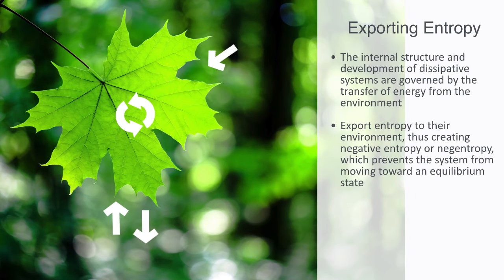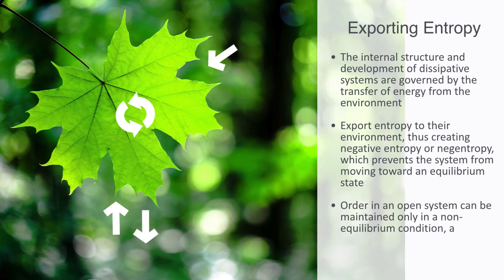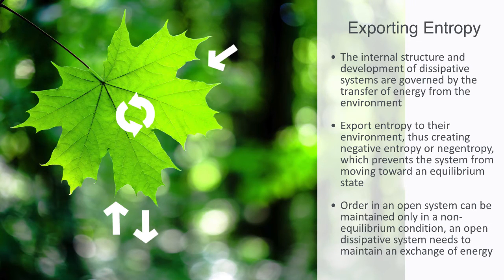This prevents the system from moving towards an equilibrium state. A negentropic process is therefore the foundation for growth and evolution in thermodynamic systems. It can be said that order in an open system can be maintained only in a non-equilibrium condition. In other words, an open, dissipative system needs to maintain an exchange of energy and resources with the environment in order to be able to continuously renew itself.